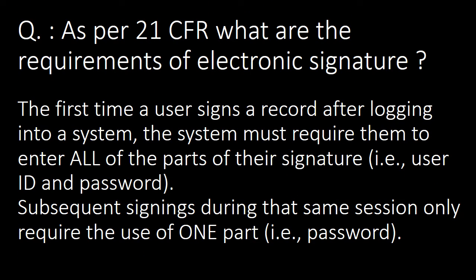Next important question: as per 21 CFR, what are the basic requirements of an electronic signature? The first time a user signs a record after logging into the system, the system must require them to enter all parts of their signature — that is, both user ID and password. Subsequent signings during that same session only require the use of one part, which is the password.